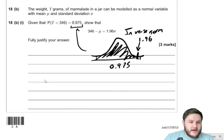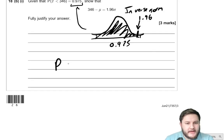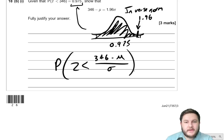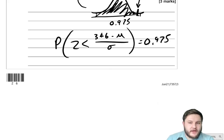So in other words, the probability that Z is less than 346 take away mu divided by the standard deviation is equal to 0.975. Now, this comes from the formula in the booklet, it's just modeled by a normal distribution. And then we know that this corresponds to a value of 1.96.